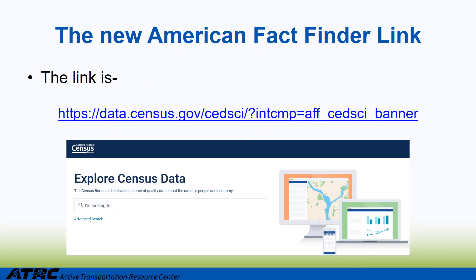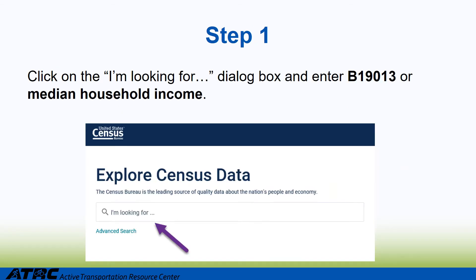There is a new link to the American Fact Finder data. The new link is https://data.census.gov/cedsci/. Step 1: Click on the 'I am looking for' dialog box indicated with a purple arrow below and either enter B19013 or 'median household income'.